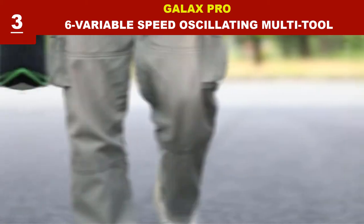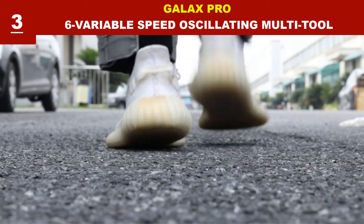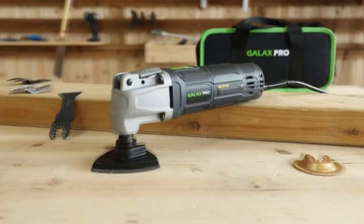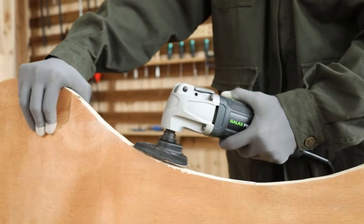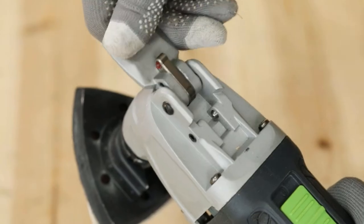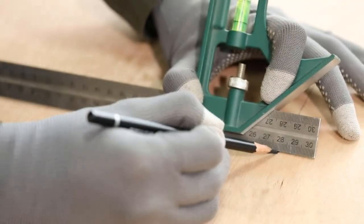The powerful 2.4 Ampere motor of Galaxy Pro provides 21,000 oscillations per minute depending on the needs of the task at hand, making cutting, sawing, grinding, and sanding easy and saving your time. Different speed settings allow you to set speed between 11,000 to 21,000 OPM.